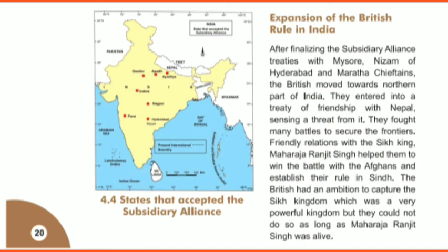They made a friendship with Nepal as they were afraid of them. They won battles along their boundaries and maintained friendly relations. Regarding the Sikh king Maharaja Ranjit Singh — they knew they could not defeat him, so Maharaja Ranjit Singh helped them to win against the Afghans. The British were ambitious to conquer the Sikh kingdom but could not, because Maharaja Ranjit Singh was alive and a very brave king. So they kept a friendly relation with him. Ranjit Singh had built a very strong army with the help of European officers.